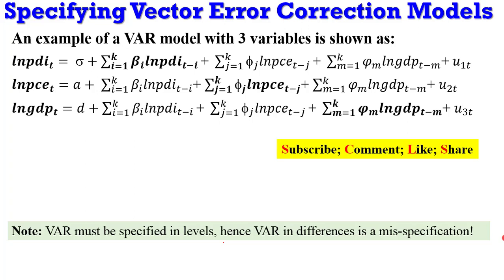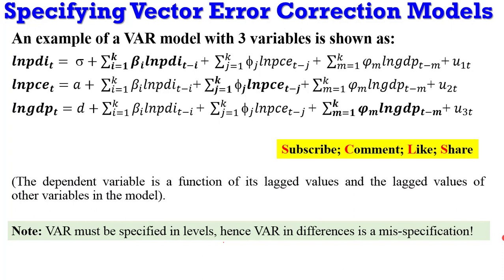On the screen, you are seeing a three-variable VAR model. One thing you will observe is that when you are specifying your VAR model, it must be specified in levels and not in first difference. If you are specifying your VAR model in differences, that is a misspecification — that is, a wrongly specified VAR model.